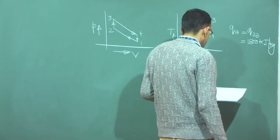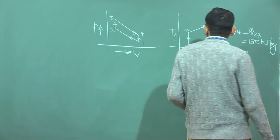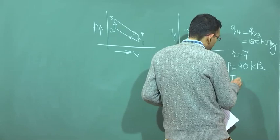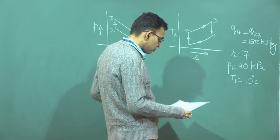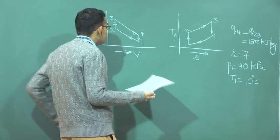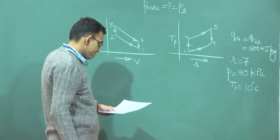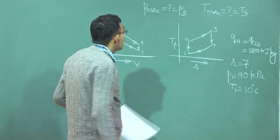The compression ratio r is 7, and pressure and temperature at the beginning of compression are P₁ = 90 kPa and T₁ = 10 degrees centigrade. We have to find P_max (which is P₃), T_max, the efficiency, and the mean effective pressure.